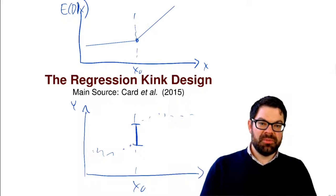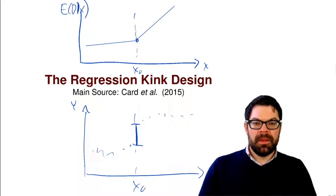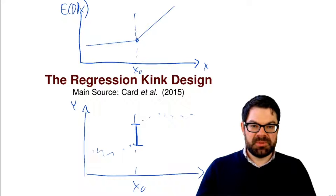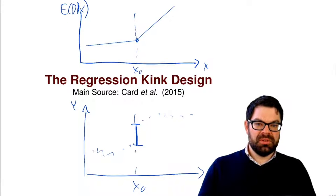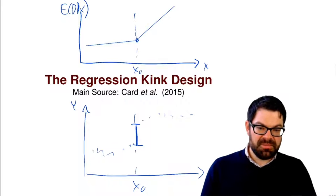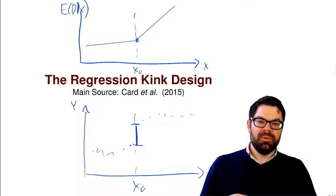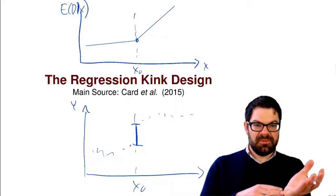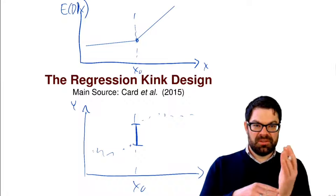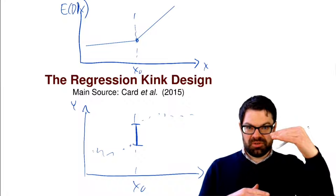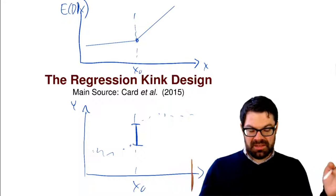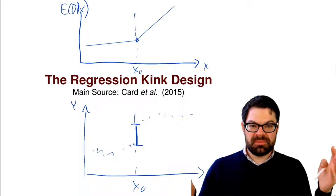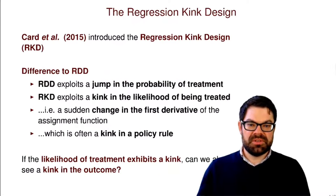Obviously, this is something that is a little bit more tricky — not so much from an analytical perspective, since getting to derive the treatment effects is actually not that hard. What is hard, however, is that you need a lot more data points to detect a difference in the first derivative rather than an actual discontinuous jump. So this is a technique for which you typically need large administrative data sets.